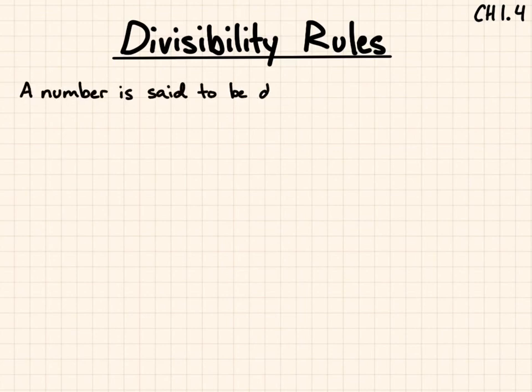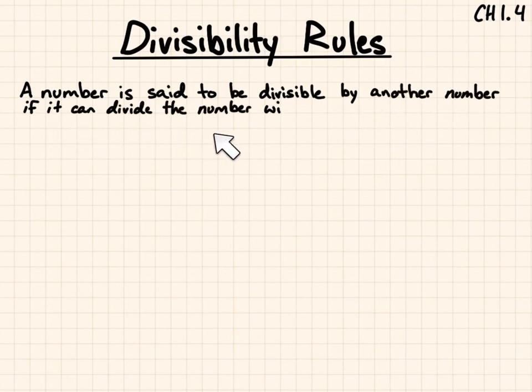A number is said to be divisible by another number if it can divide the number without any remainder. We're going to go over divisibility rules or divisibility tests to figure out whether or not a number is divisible.